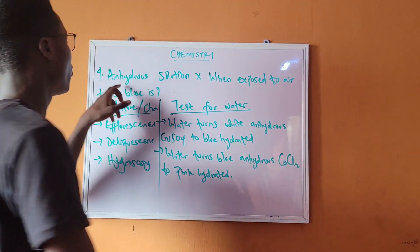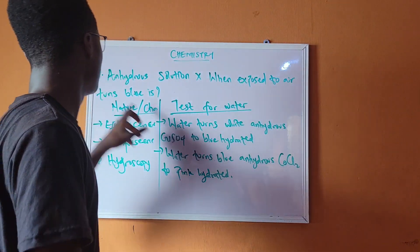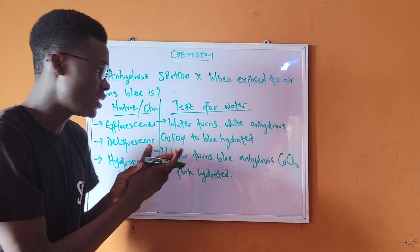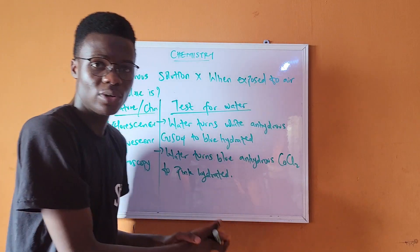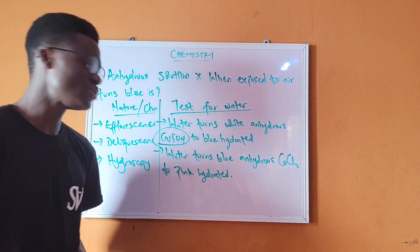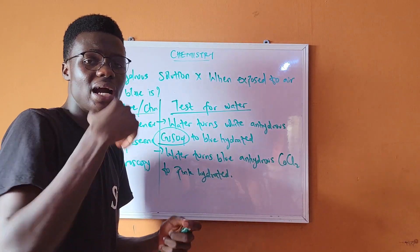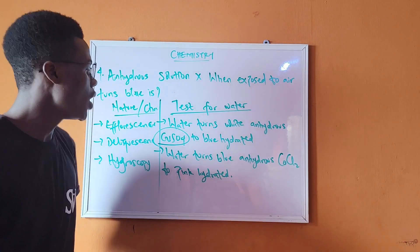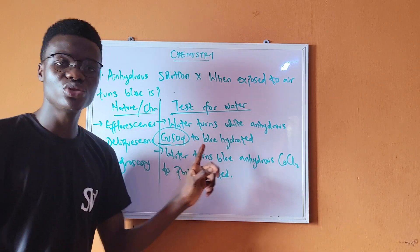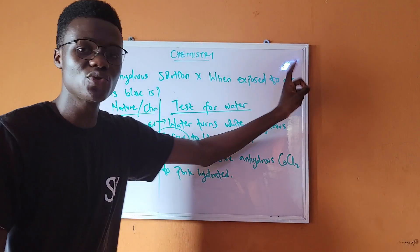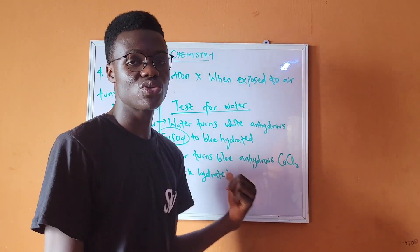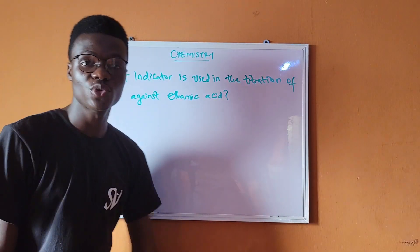Going back to the question: anhydrous solution X when exposed to air turns blue. Merging the two concepts — deliquescent salts absorb water from the atmosphere, and the test for water shows that anhydrous CuSO₄ turns blue when water is added. So the answer is CuSO₄, that is copper(II) tetraoxosulfate(VI).